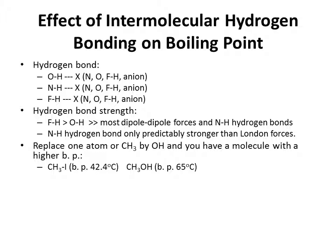Since a hydrogen bond made by OH is reliably stronger than a single dipole-dipole force or a London force, replacing one atom or the terminal CH3 in a molecule with an OH group will automatically lead to a molecule with a higher boiling point — such as methyl iodide, with a boiling point of 42.4 degrees Celsius, being converted into methanol with a boiling point of 65 degrees Celsius. We replace the iodine atom with an OH group, which can now hydrogen bond to itself, forming much tighter intermolecular forces and a higher boiling point. But remember, just one atom or CH3 is replaced by the OH.